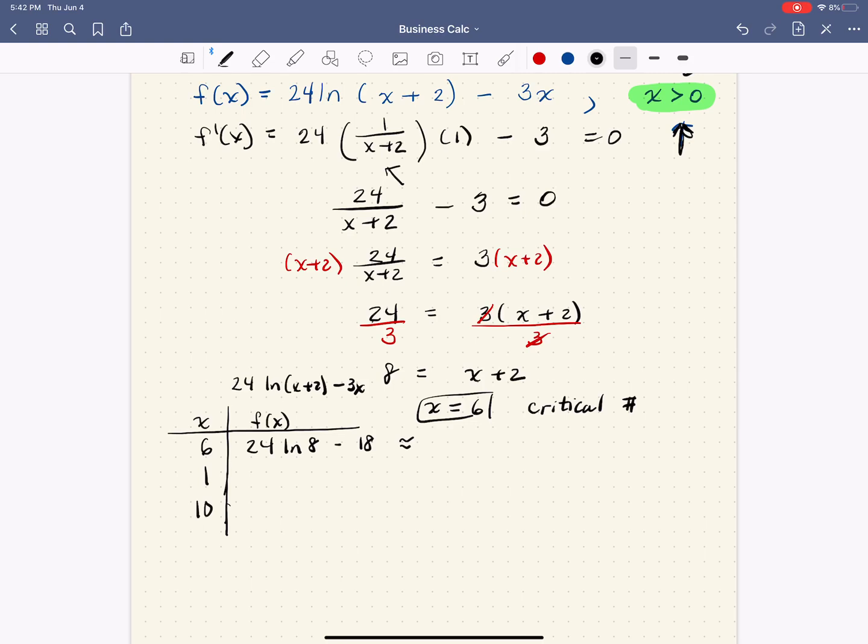So when x equals 1, we have 24 natural log of 3 minus 3. And when x is 10, 24 natural log of 12 minus 30.